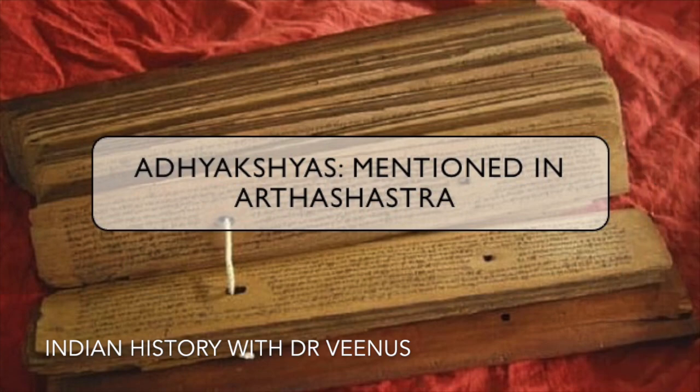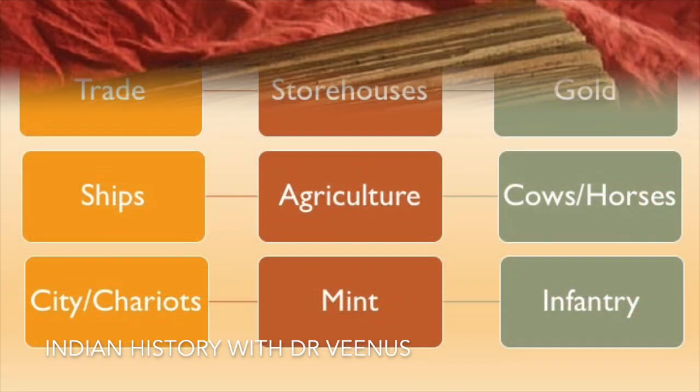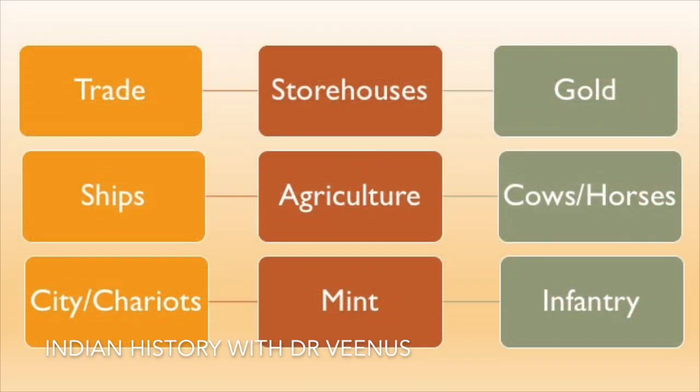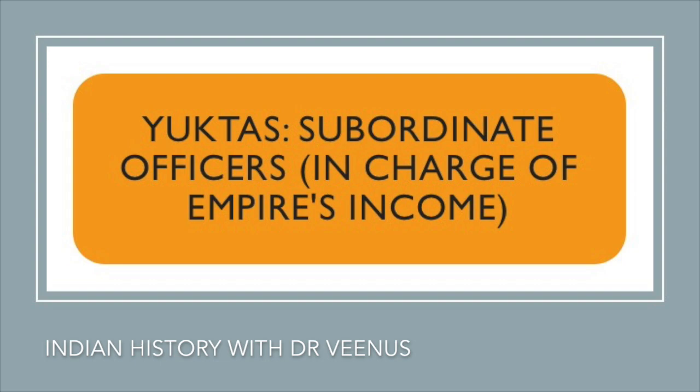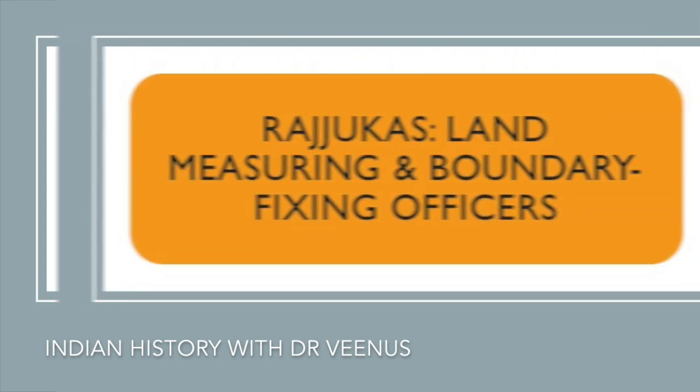Many Adhyakshas are mentioned in the Arthashastra for trade, storehouses, gold, ships, agriculture, cows, horses, city, chariots, mint, infantry, and so on. Yuktas are subordinate officers in charge of the empire's income. Rajuks were land-measuring and boundary-fixing officers.